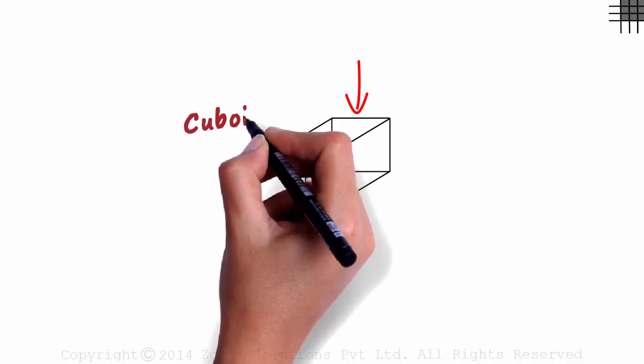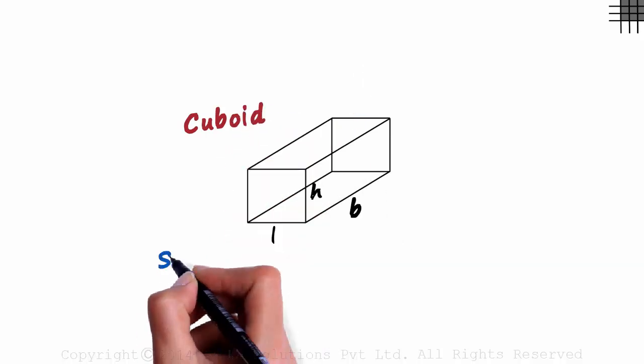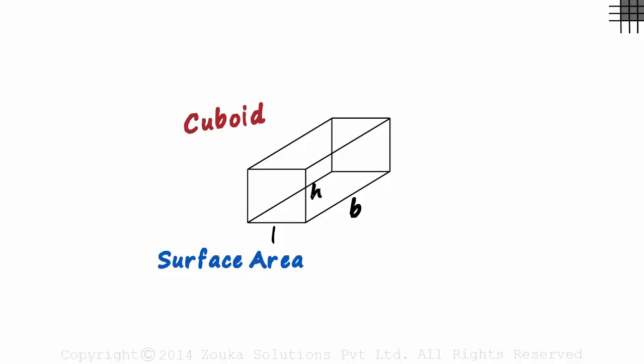This is a cuboid. What will be its surface area? As the name suggests, it will be the total area of all its surfaces.